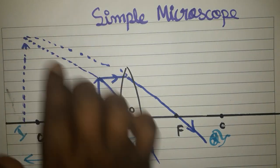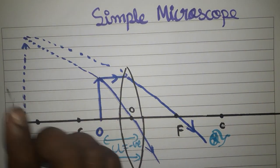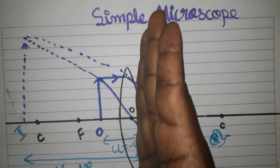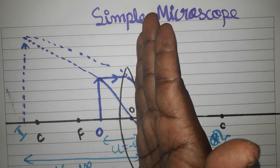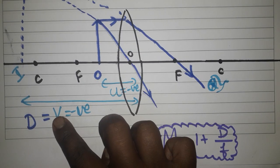The diverging ray always converges at the back side. The final image is formed here. This is the object, this is the image. From the lens, the object distance is left side. From the lens, the image distance is left side. So u is negative, v is negative.